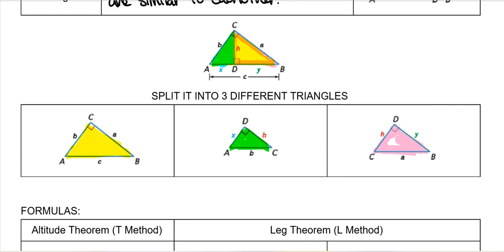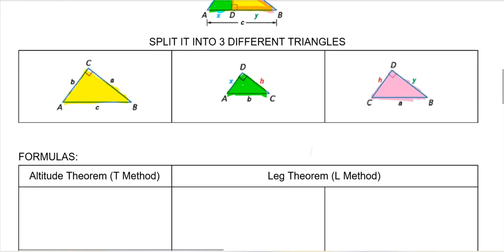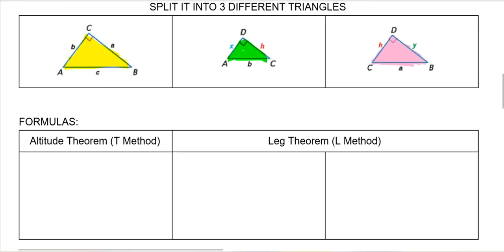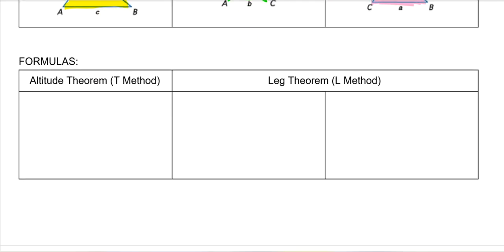And of course you have the third triangle on the right. They're all rotated and even reflected so that they show you the similar pieces. Now, instead of trying to tear this apart in your head and being able to see the three individual triangles — which is insanely complicated — there are methods to solving these.